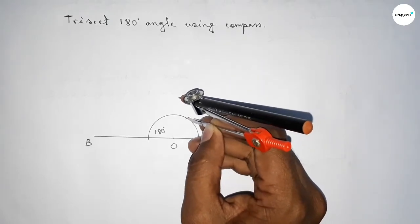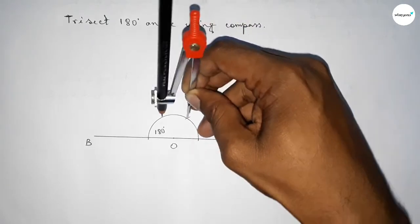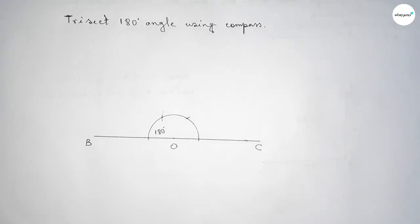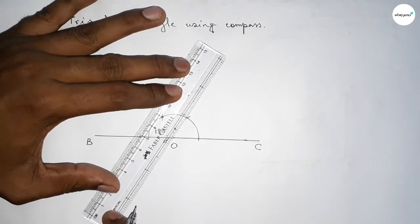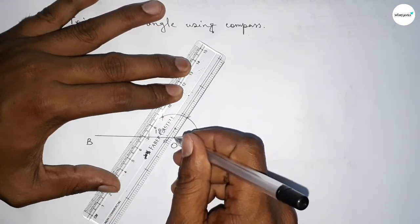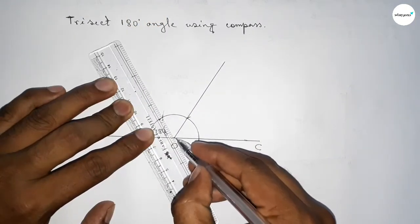cut here, and putting the compass here and cut here. So first joining this line, then joining this line to